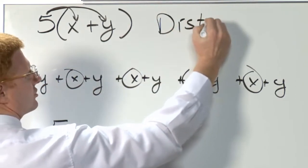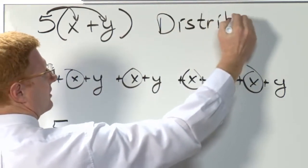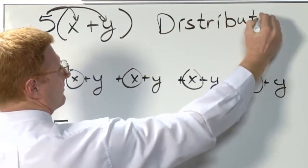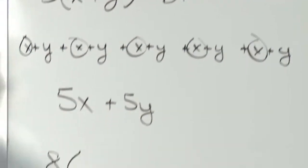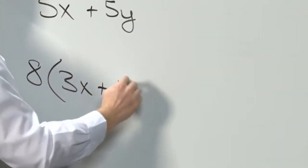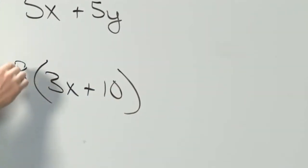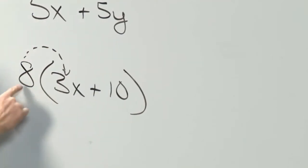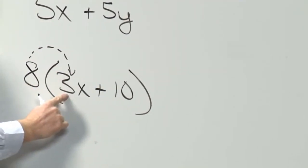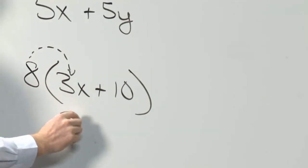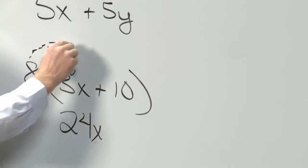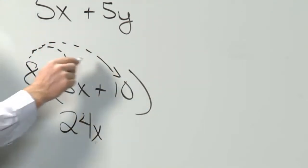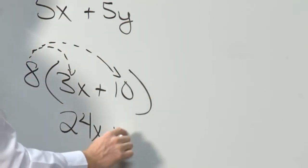That's why it is called the distributive property. It's going to come in really handy. Let's try another one: 8 times (3x + 10). The eight is going to come in here — it's eight times three — and eight times ten is eighty.